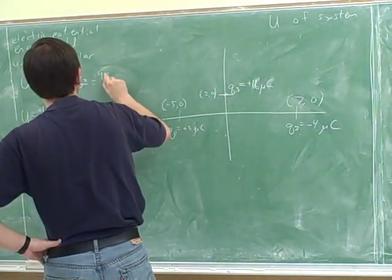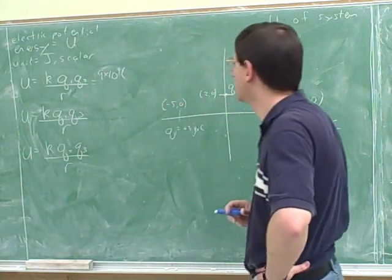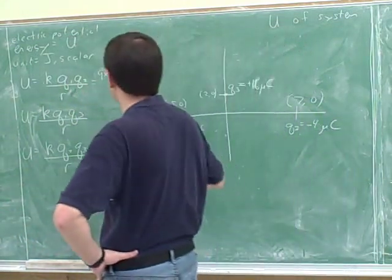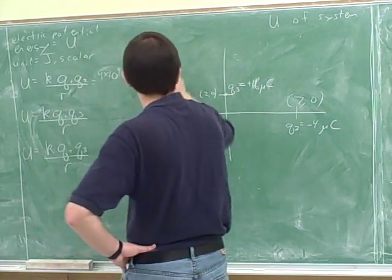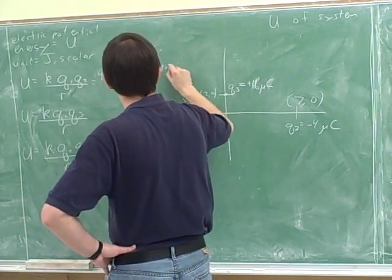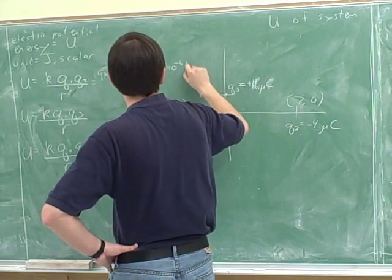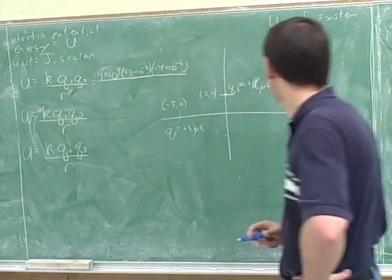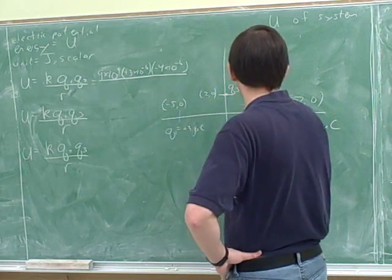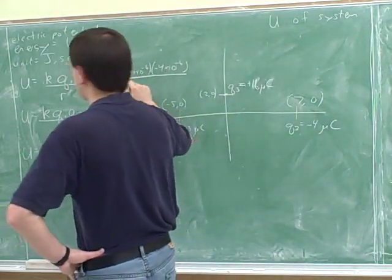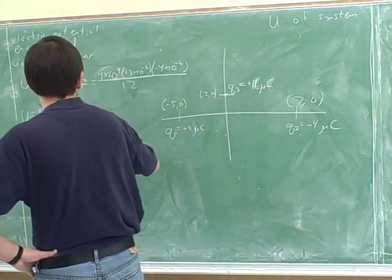So we'll have to do each of these. So this would be 9 times 10 to the 9th times what? Times 3 times 10 to the negative 6. Times negative 4 times 10 to the negative 6. Good. Over 14. How'd you get that 14? I'm sorry. Over 12. Yeah. Sorry. From here to here is 5, and from here to here is 7. Okay? And we don't square that, because this is energy, not force. Yeah. Okay.